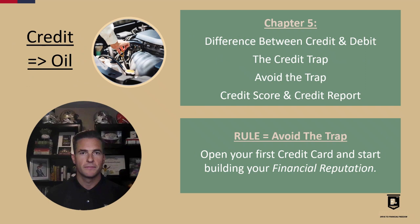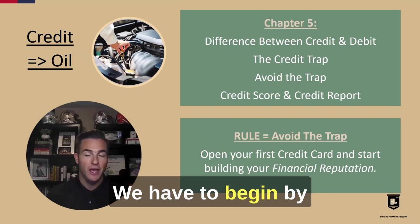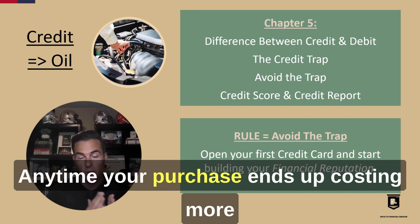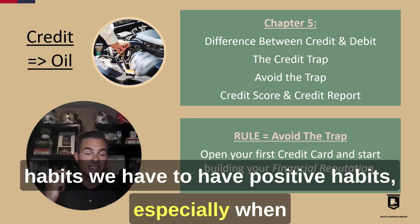Where is the first place people make a mistake in their car? They don't check their oil. Where is the oil in your money vehicle? It's going to be your credit. We have to begin by differentiating between debit and credit, and that credit is a loan of other people's money. The credit trap: anytime your purchase ends up costing more than you originally thought, that credit starts to work against you. Avoiding the credit trap — going back to chapter three's habits — we have to have positive habits, especially when dealing with credit and other people's money.